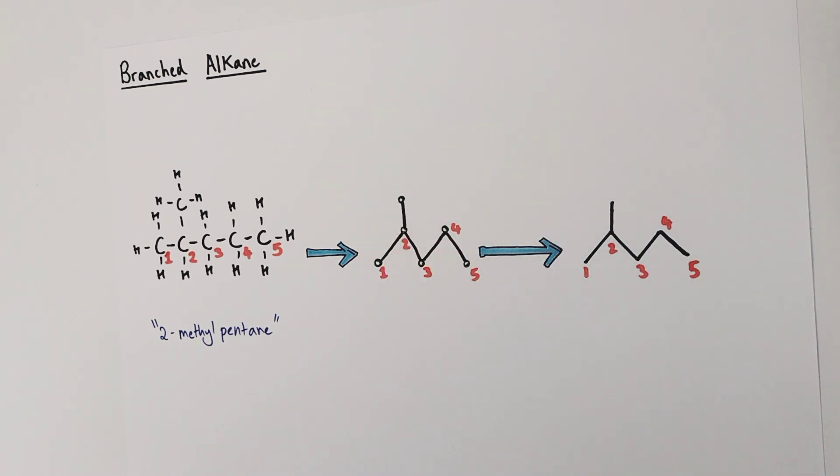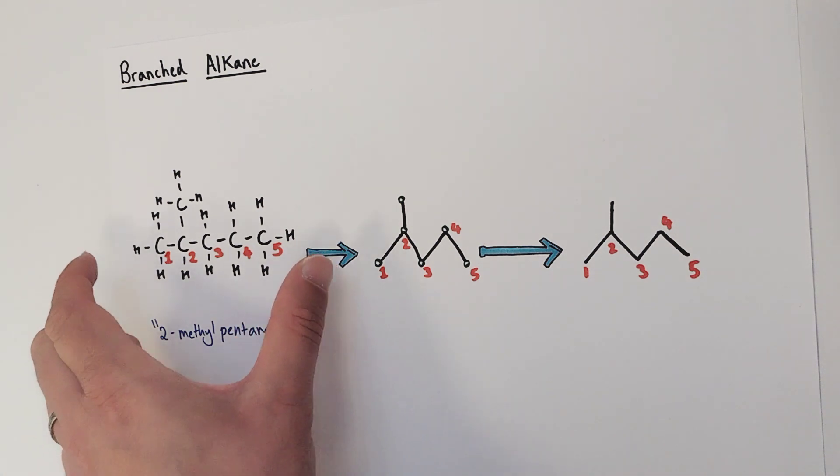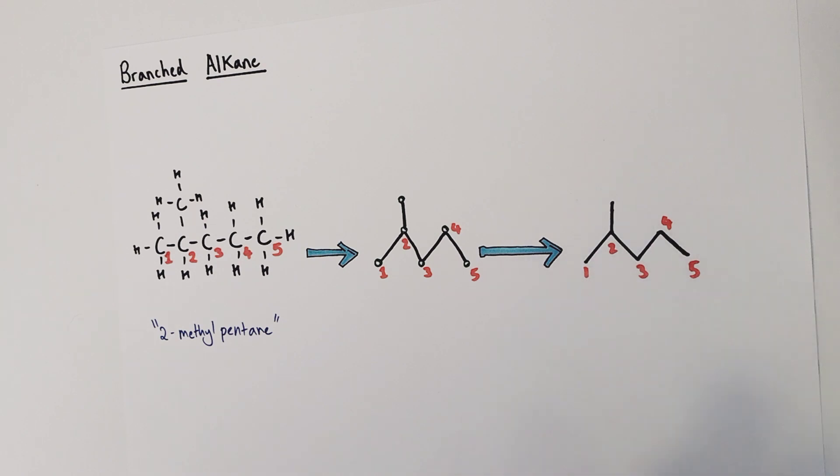So we don't actually show the points where our carbon positions are. This is super quick, we just literally draw a zigzag line with an extra little line coming up here and that's 2-methylpentane represented skeletally. Now you can see the benefit of a skeletal formula. This takes quite a long time to draw out the displayed formula, this little squiggle would take me seconds to draw and any chemist worth their salt will recognize this molecule instantly.